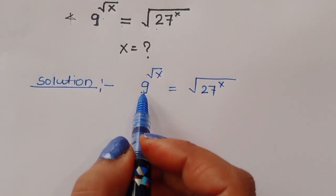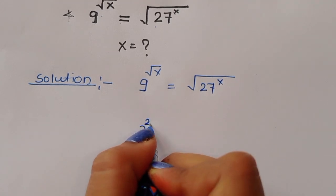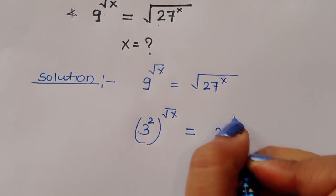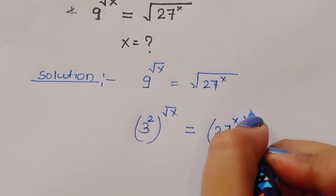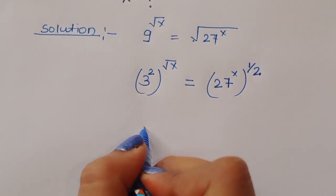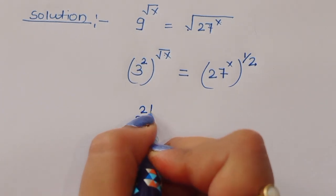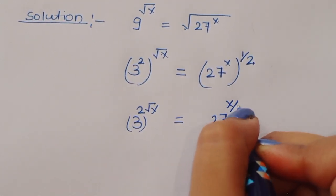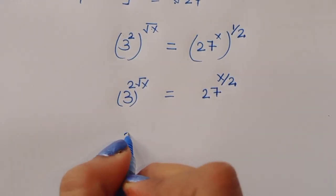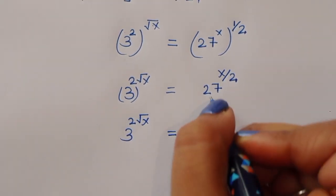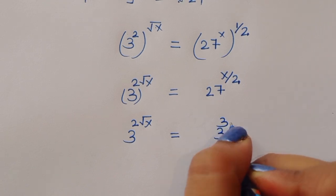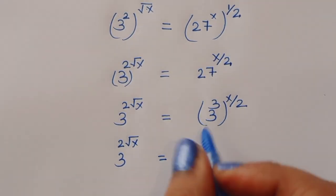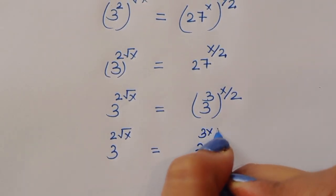We can rewrite 9 as 3 squared, so we have 3 squared to the power of square root of x. The square root can be written as power 1 by 2, giving 3 to the power of 2 root x equals 27 to the power of x by 2. Now we rewrite 27 as 3 cubed, so 3 to the power 2 root x equals 3 to the power 3x by 2.